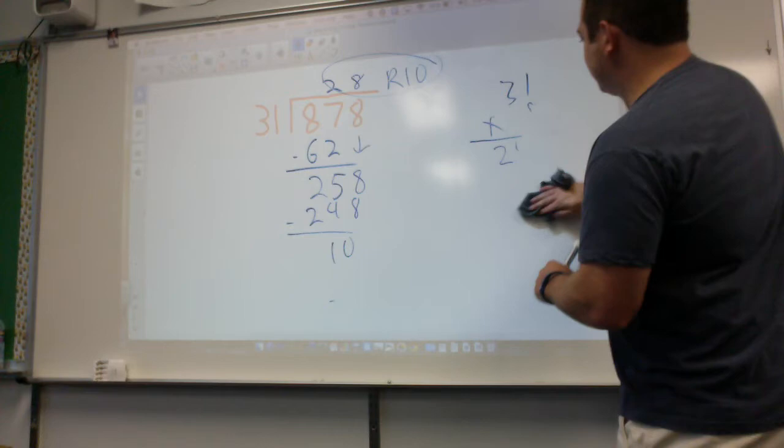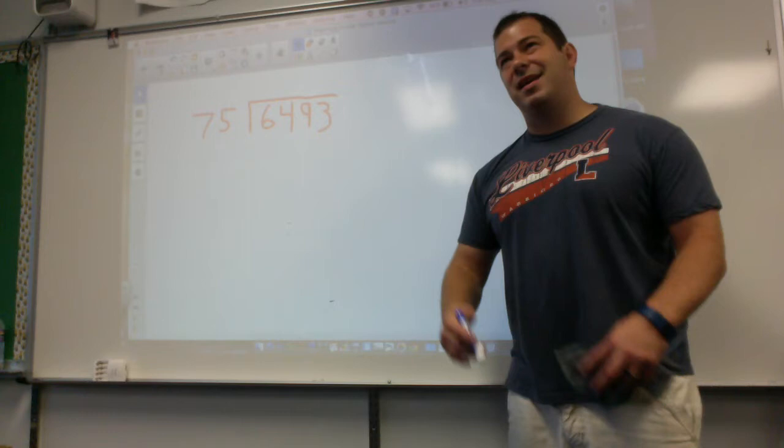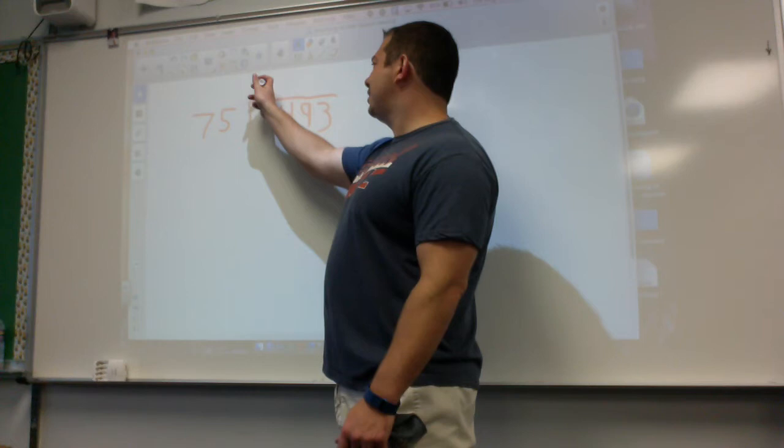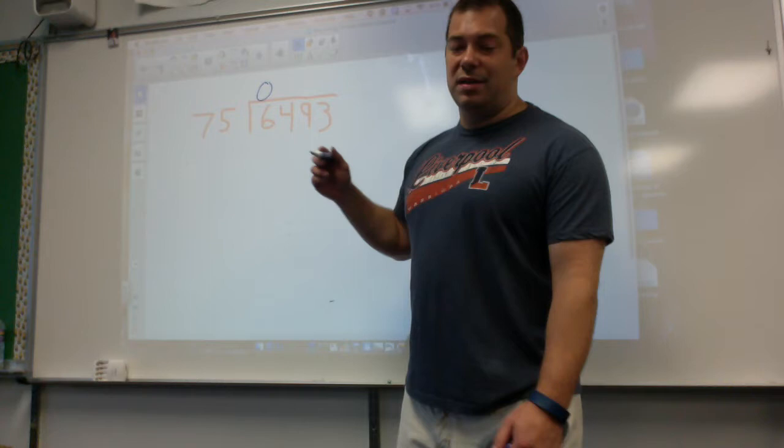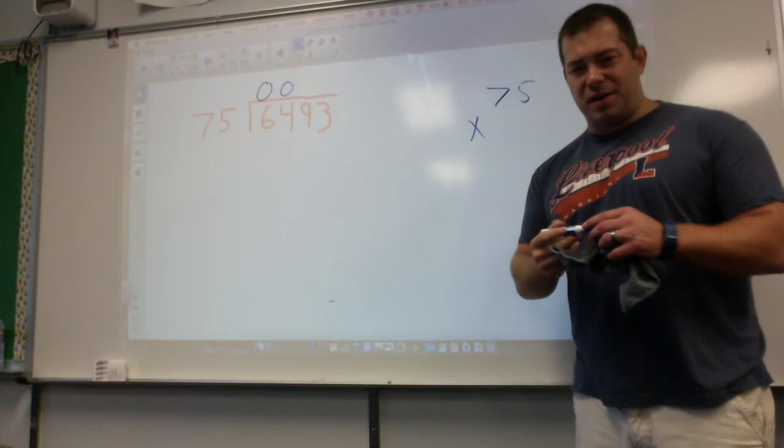Here's our next example. We're getting a little bit harder. It's not the most fun thing in the world, but we need to be able to do it. Later on we could do these things with calculators, but for now we've got to know how to do it. Could 75 go into 6? No, cannot. Could 75 go into 64? Well it can, but it'd be a decimal. So no. Now, how many times could 75 go into 649? We have to do some good guessing, let's use logic.